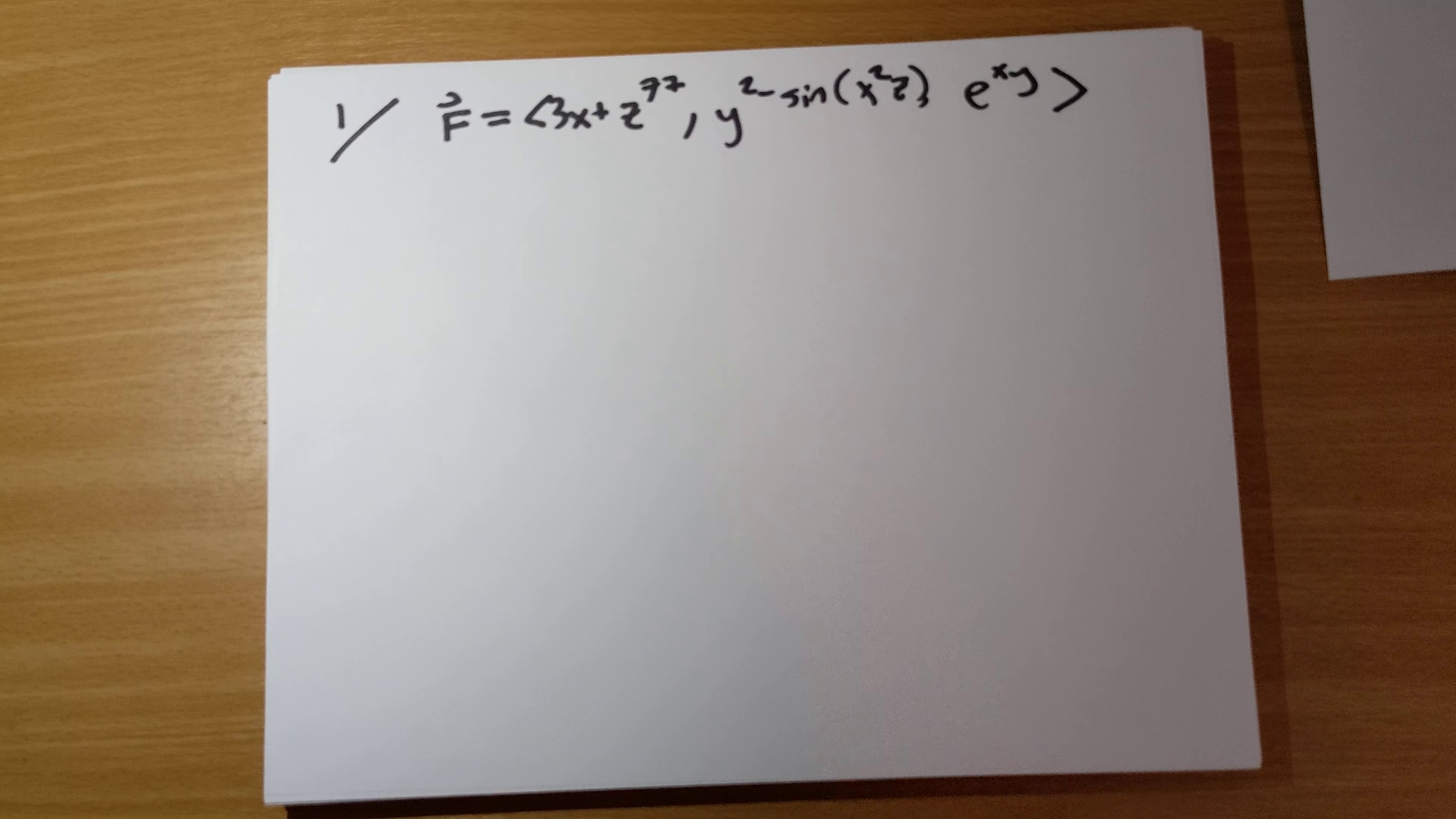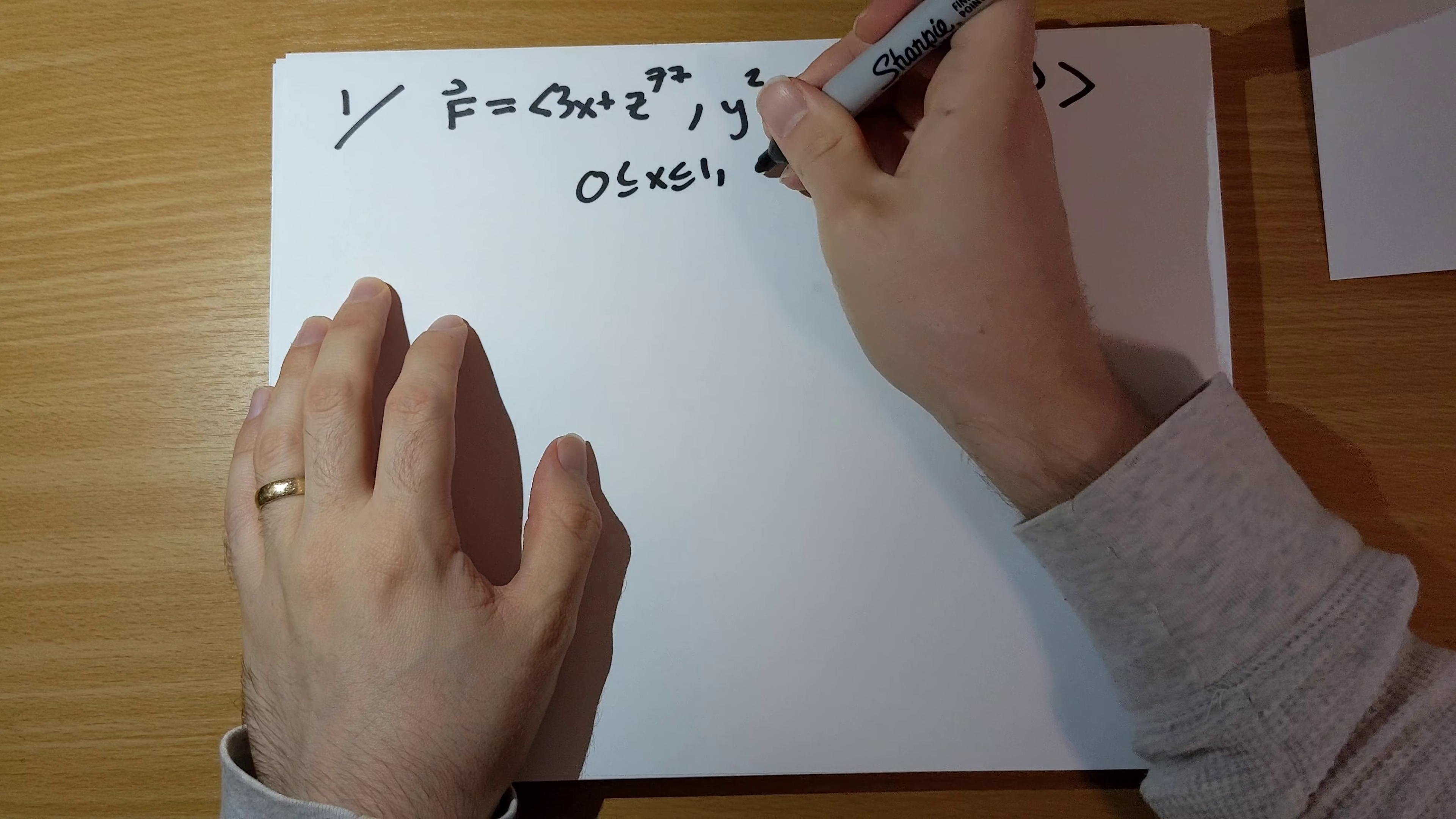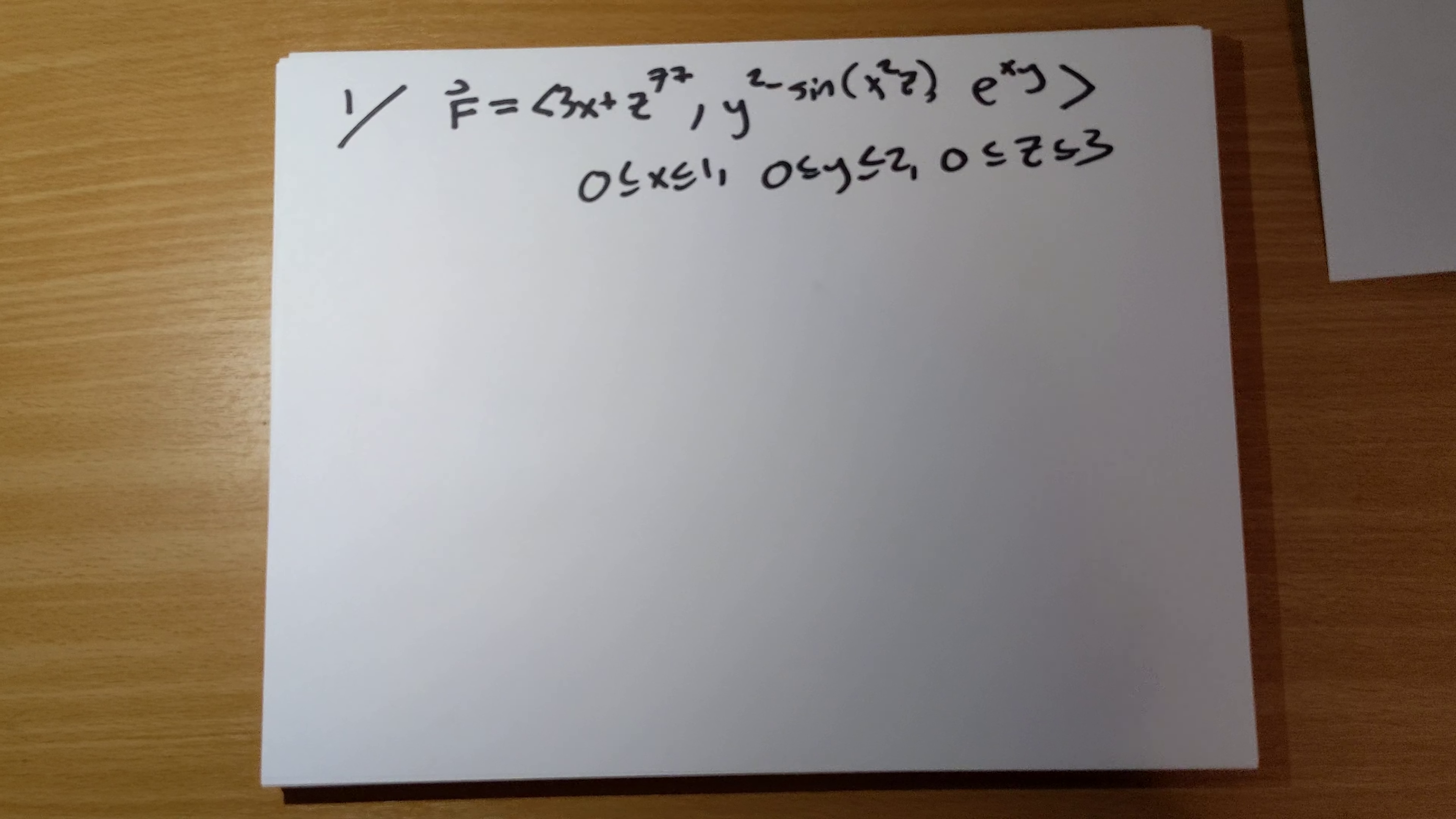Problem number one. Evaluate the flux of this vector field over the boundary of the box x runs from 0 to 1, y runs from 0 to 2, z runs from 0 to 3 for this vector field f.